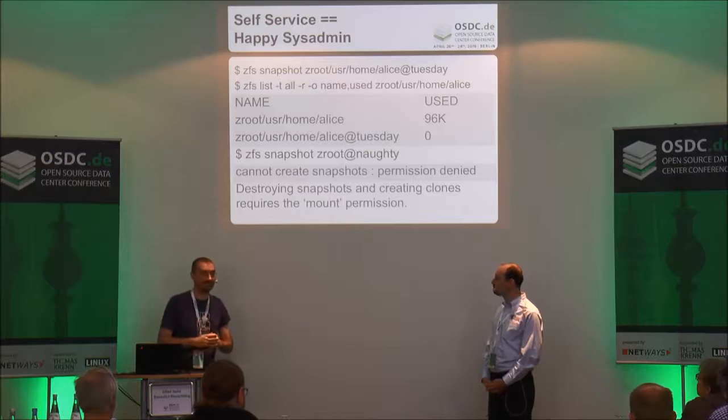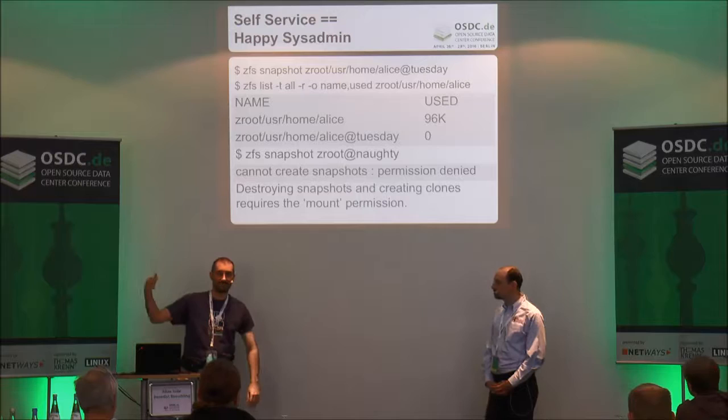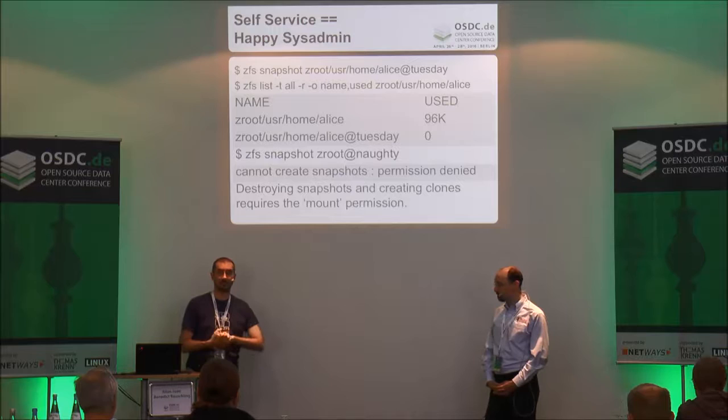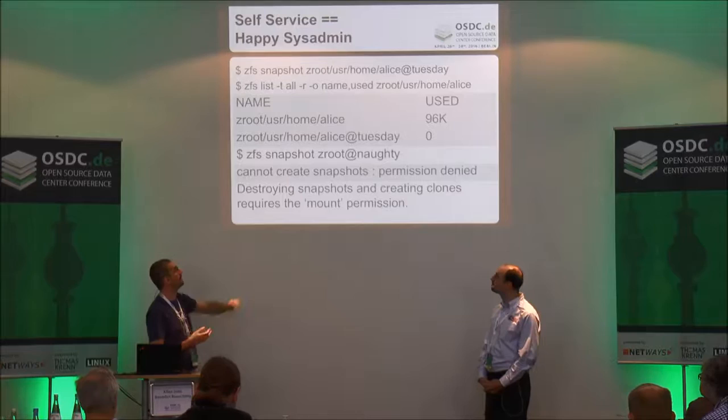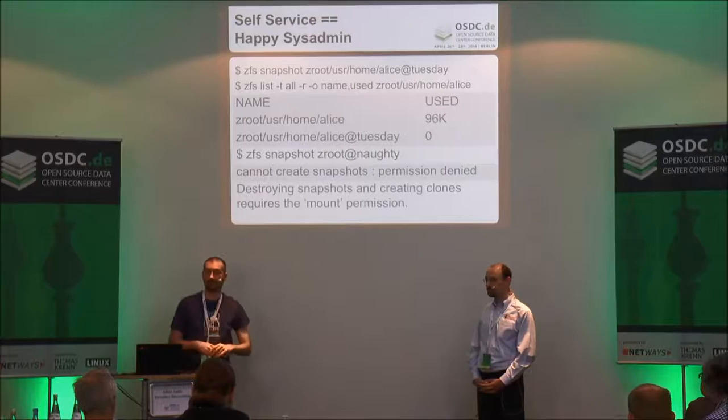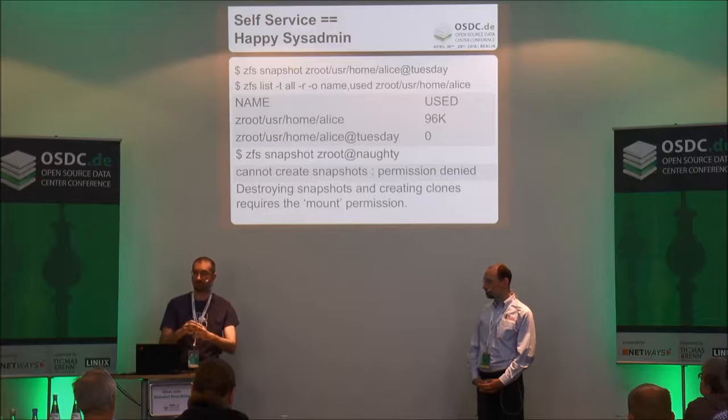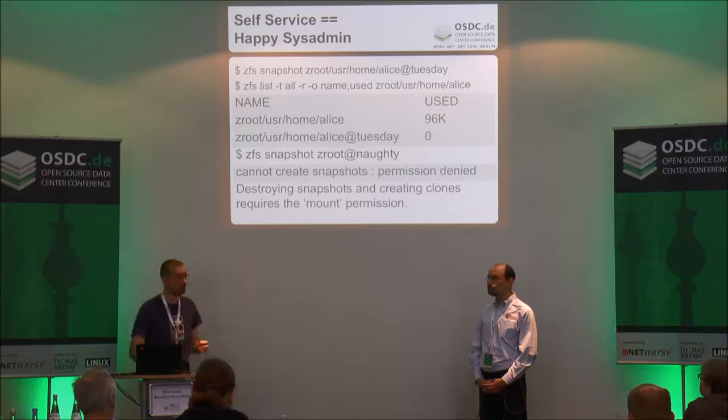Snapshots have a cost — if you have thousands of them, running the ZFS list command will be slower. You can enforce a limit on how many snapshots a user is allowed to have, so they can't do a denial-of-service against your system by creating snapshots in a loop. If they try to create too many, they get a permission denied error. You can limit the number of file systems or snapshots that can be created as children of a certain dataset.